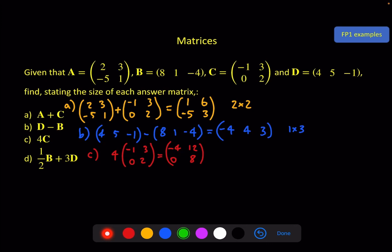And part D, half of B plus 3 times D. So we want a half of B, which is 8, 1, minus 4, plus 3 lots of D, 4, 5, minus 1.